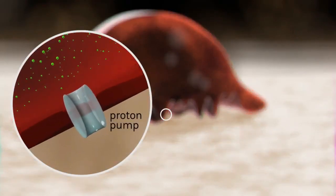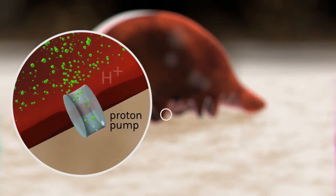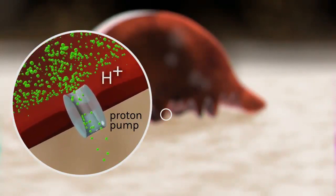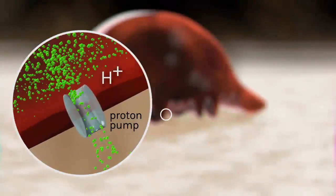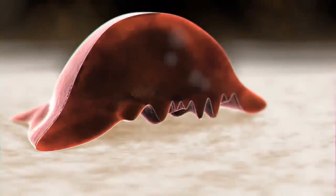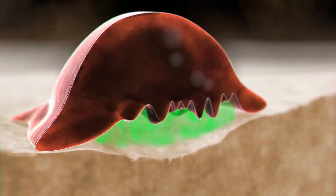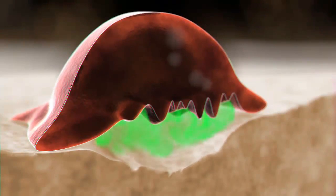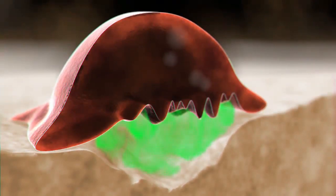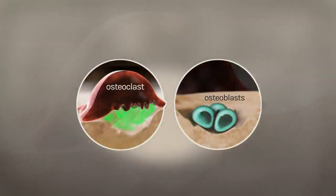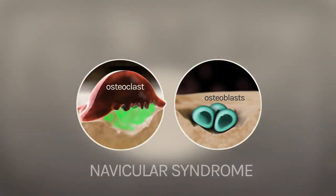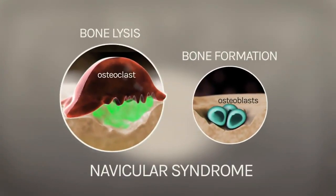Proton pumps in the osteoclast membrane move hydrogen ions from inside the cell across the ruffled border, creating an acidic microenvironment. This acidic environment allows lysosomal enzymes from the osteoclast to degrade the organic matrix of the bone. In navicular syndrome, bone lysis outpaces bone formation.